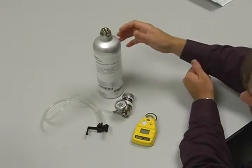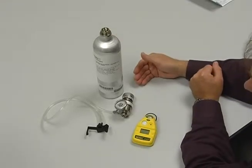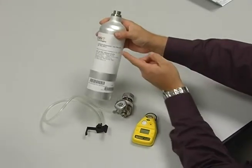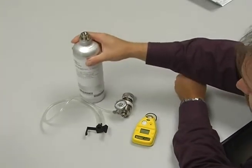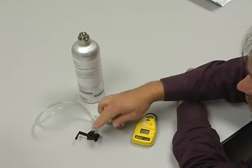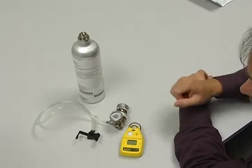The necessary items that are required for calibrating the P100CO unit are a sample bottle of gas containing 100 parts per million, the calibration or bottle regulator, and the calibration adapter as well as the instrument itself.